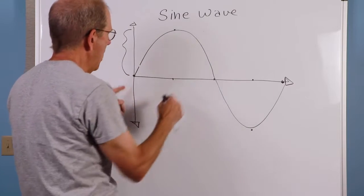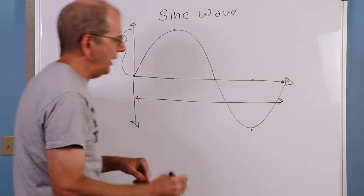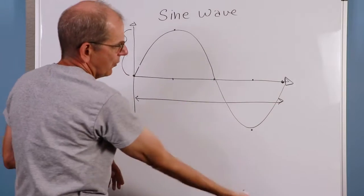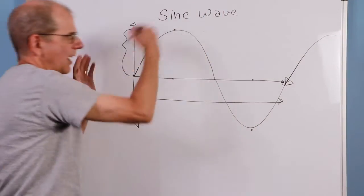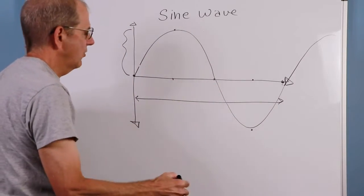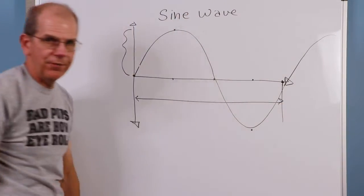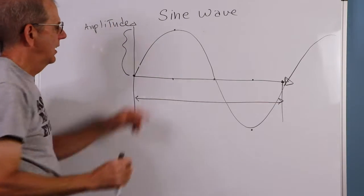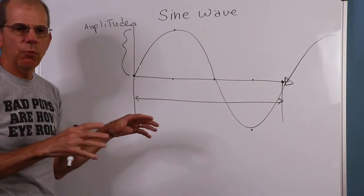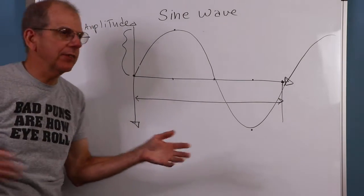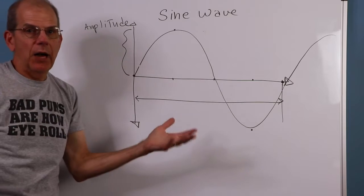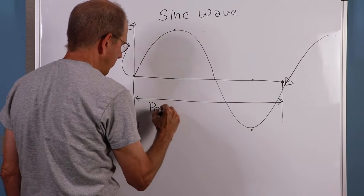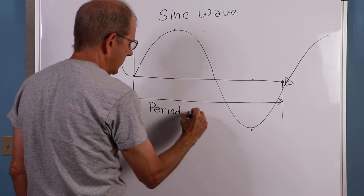Then I also want to know how long does it take for this thing to repeat itself? Because once it gets back here, that vector was going around like this, that second hand, then it just continues for another revolution. And this just gives me the same exact thing all over again. It just keeps going. So I want to know how long it takes for this thing to repeat itself. So we've got an amplitude up here. How tall is it?